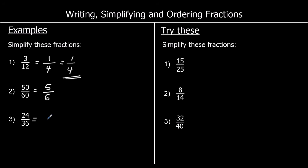For the next one, we've got 24 over 36. I'll do this in steps. I'm going to say they're both in the two times table — they're both even numbers — so I can half the top and the bottom. Half of 24 is 12, and half of 36 is 18. So 24 out of 36 is the same as 12 out of 18. But 12 and 18 are also in the same times table. Two sixes make 12 and two nines make 18. So I've got six ninths, which is equivalent to 12 eighteenths or 24 out of 36.